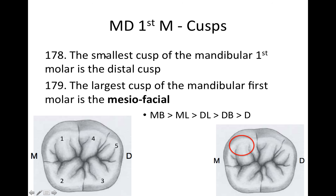More on the cusps — looking at cusp size, the smallest cusp in the mandibular first molar is the distal cusp, and the largest is the mesiofacial. On most of these teeth, the mesial half is larger than the distal in terms of cusps. The order from largest to smallest is: mesial buccal, mesiolingual, distal lingual, distal buccal, then distal.